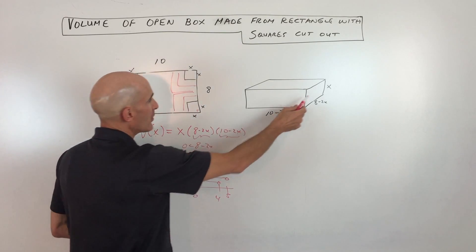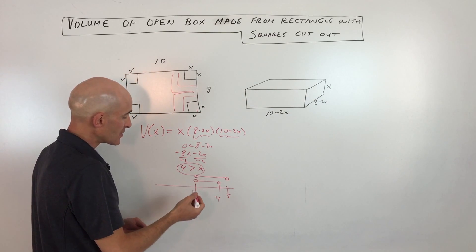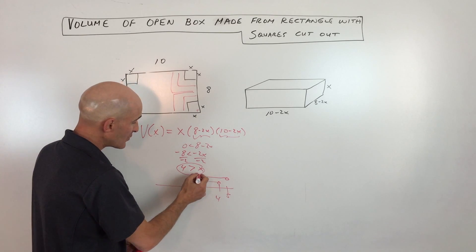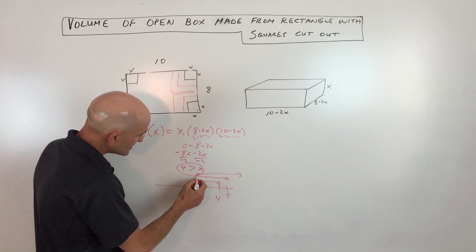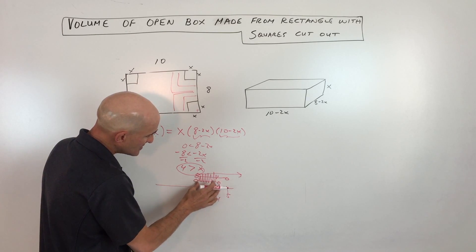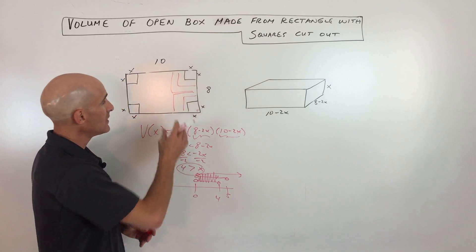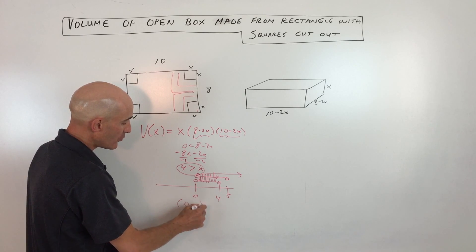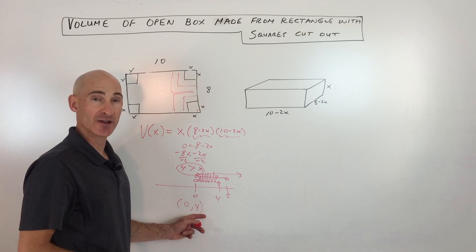And then with the height here, you can see that x has to be greater than 0. If it was 0, you're not taking a square out of the corners at all. It has to be greater than 0. So what I'm doing here is I'm plotting these all on the same number line, and you can see where they're overlapping here is between 0 and 4. That's the intersection of the three sets. So that means that our domain for this problem is x has to be between 0 and 4. So I'm just using the interval notation, not including 0, not including 4.